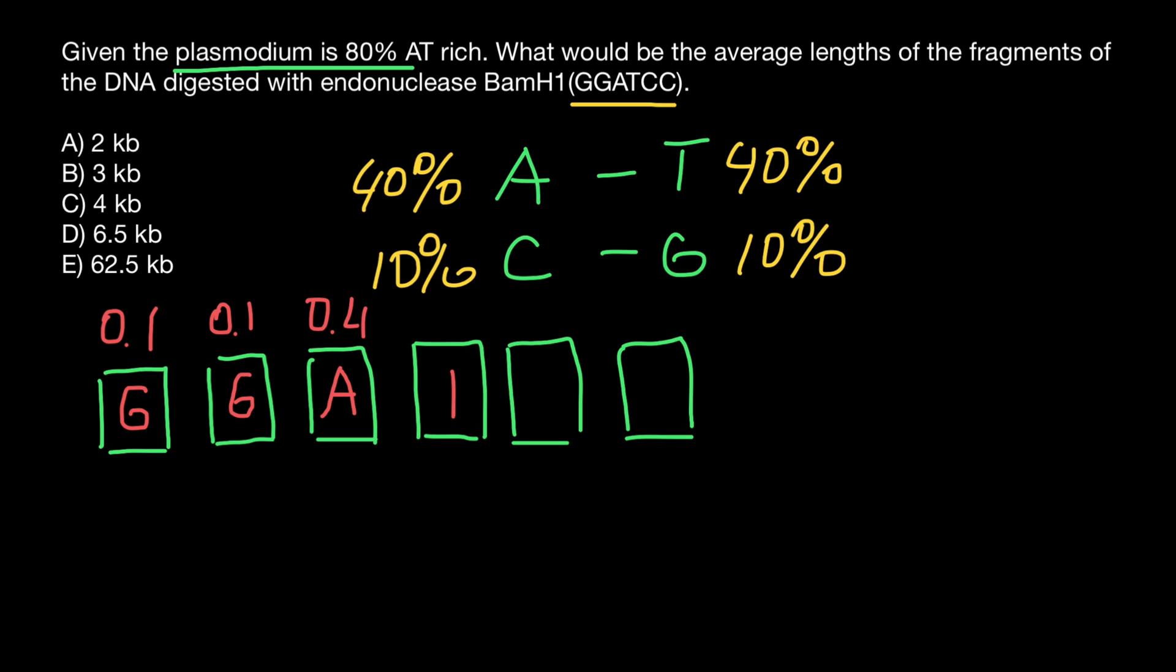Next, thymine is also 0.4, then cytosine 0.1. And in the last position, cytosine probability is also 10% or 0.1.